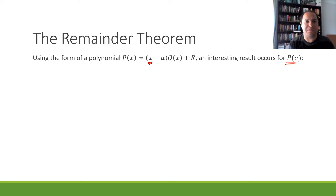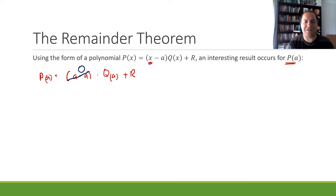So let's look at what that looks like. If we've got p(a), that means we're substituting a for whatever we see in x, so that will be (a minus a) times q(a) plus r. What's going to happen here is a minus a gives us 0, so 0 times q(a) means that whole term equals 0.